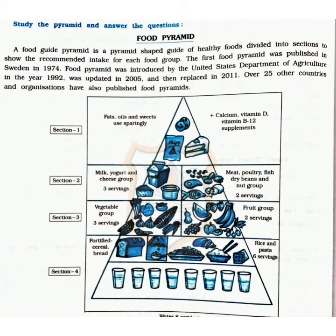Now we move on to activity 6: study the pyramid and answer the questions. This is the food pyramid. A food guide pyramid is a pyramid-shaped guide for healthy food, divided into sections to show the recommended intake for each food group. The first food pyramid was published in Sweden in 1974. It was introduced by the United States Department of Agriculture in 1992, updated in 2005, and then replaced in 2011. Over 25 other countries and organizations have also published food pyramids. You can see the chart and some questions are given — I will give you the answers in PDF. Thank you.